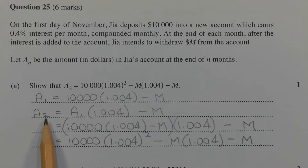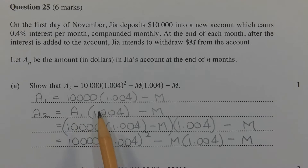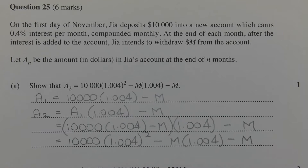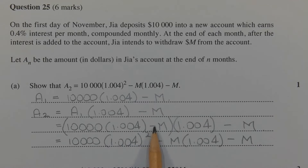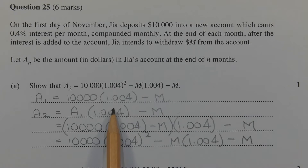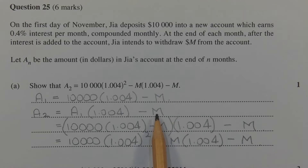Let's work out the recurrence relation that represents A2, which is the amount in the account at the end of the second month. Starting off with the amount at the end of the first month, increasing that by 0.4%, and then taking away another M dollar withdrawal. A1 is this expression here, so substituting in: A2 is equal to (10,000 times 1.004 minus M) times 1.004, then take away M.